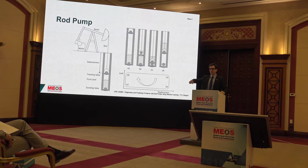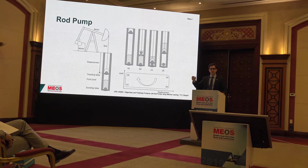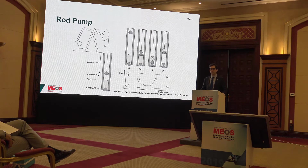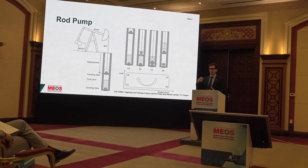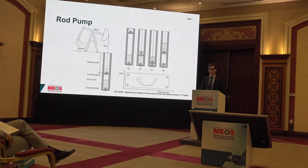The horse head moves up and down, meaning that the rod moves up and down. There's a traveling valve attached to the bottom of the rod. At the bottom of the well, there's a standing valve, and between the two of them, it is basically a sucking motion drawing the oil from the bottom of the well to the surface.